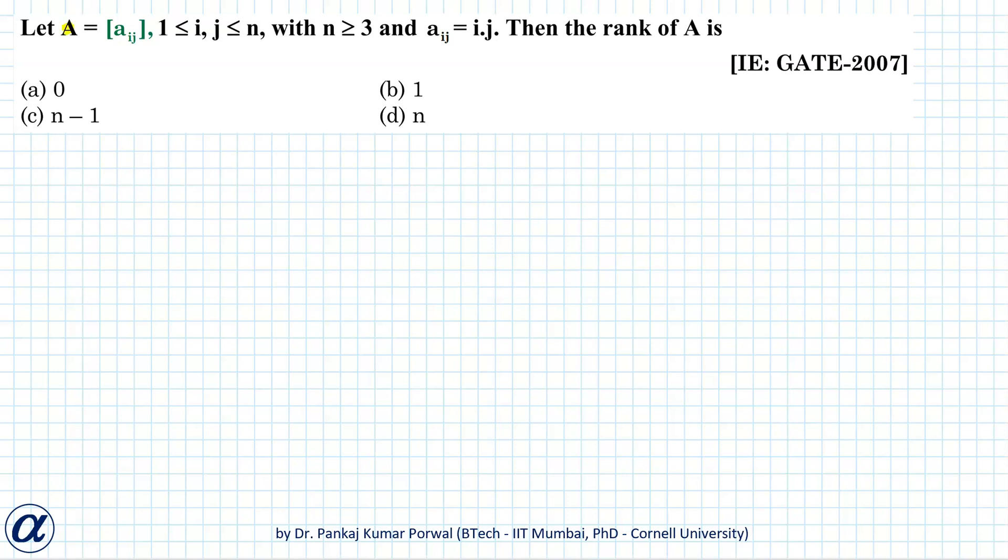In this question we are given a matrix A consisting of elements Aij where i and j are greater than or equal to 1 and less than or equal to n, with n greater than or equal to 3, and Aij is given as i times j.